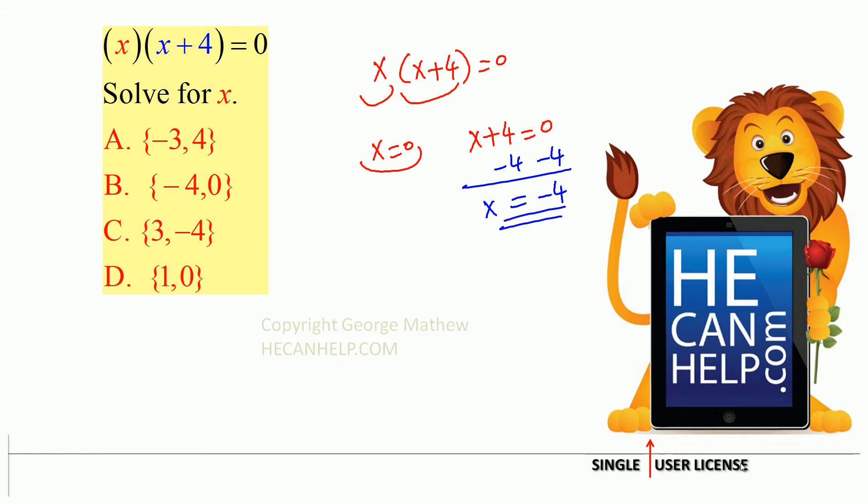So we have two solutions. x is equal to 0 and x equals negative 4. So negative 4, 0. So our solution set will have negative 4 and 0. So answer is B.